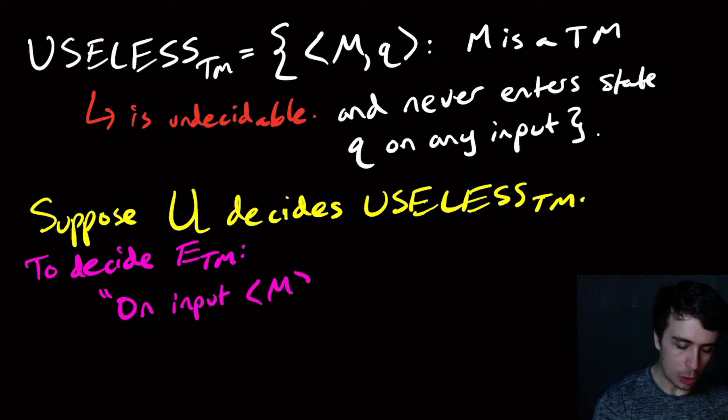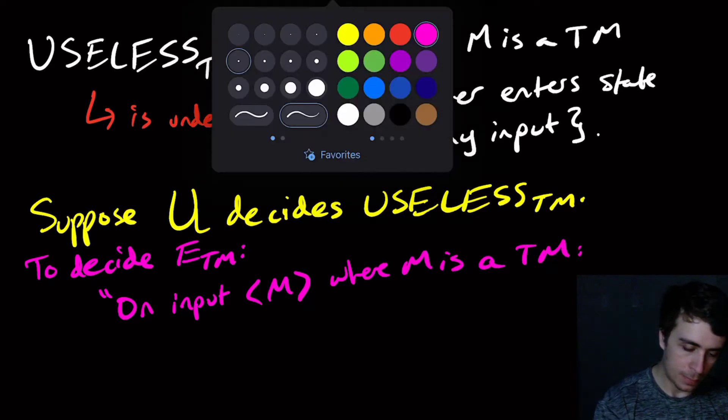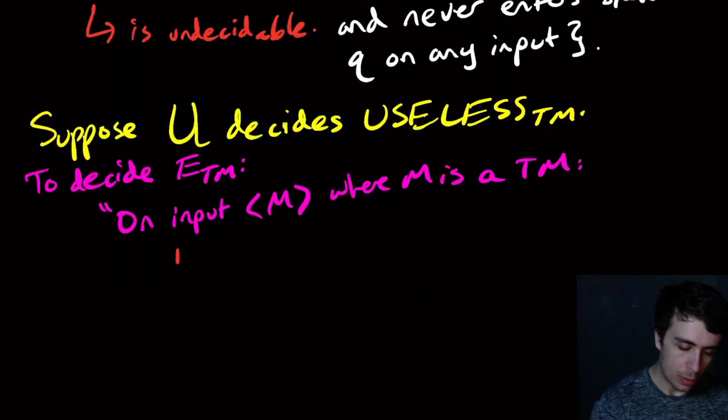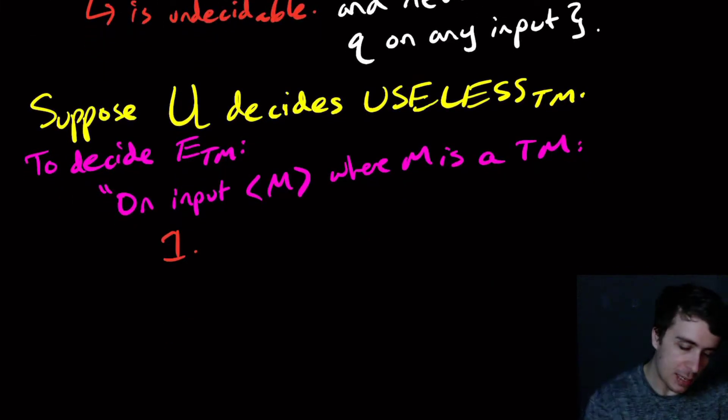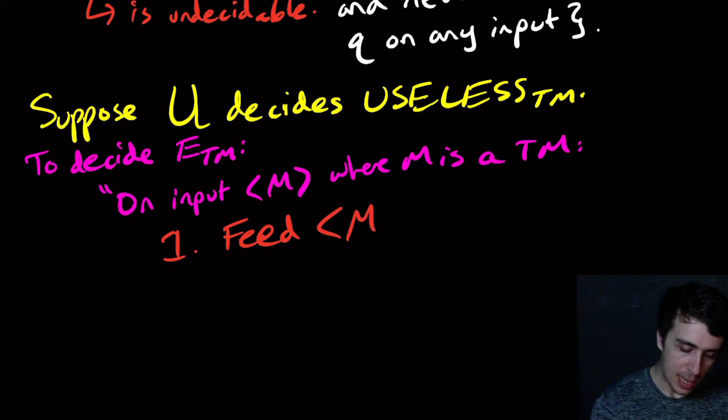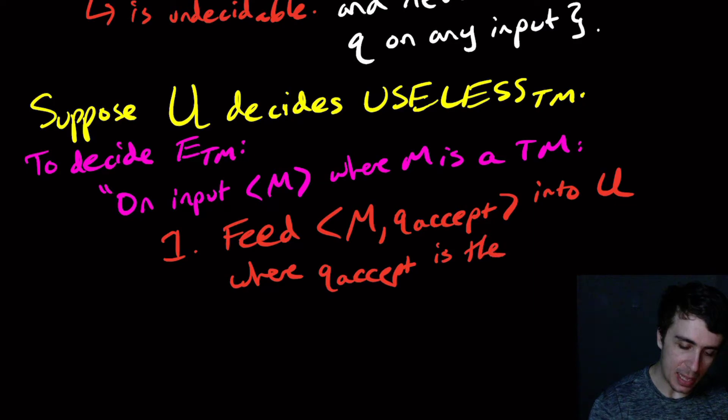Remember for E_TM it takes a single Turing machine M where M is a Turing machine. What we're going to do is, in order to utilize this supposed decider, we need to provide a Turing machine and a state of that machine to it. Let's just feed M and its own accept state, so feed M and q_accept into U.